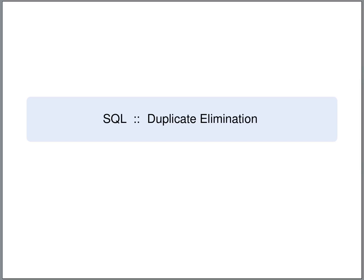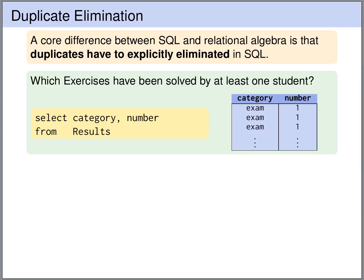SQL allows the elimination of duplicate rows from the result using the DISTINCT keyword. An important difference between SQL and the pure relational model is that duplicate rows have to be explicitly eliminated in SQL.